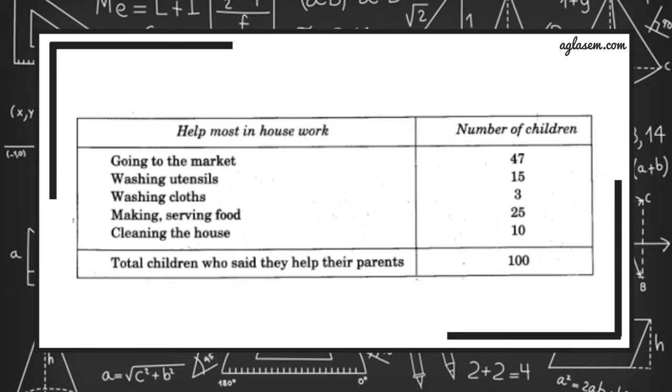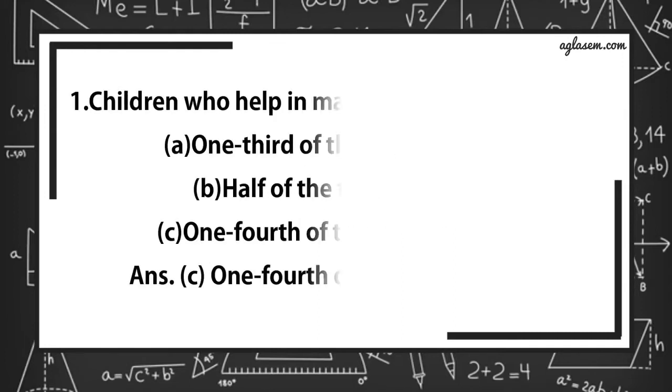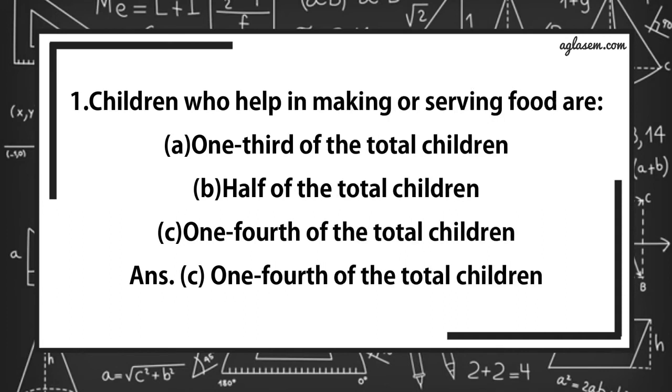Now, you can fill the chapati chart to show the number given in the table. Look and find out. Children who help in making or serving food: one third of the total children, half of the total children, or one fourth of the total children? Answer is C, that is, one fourth of the total children.